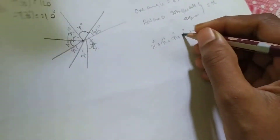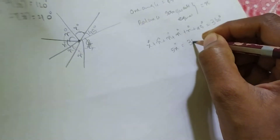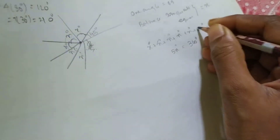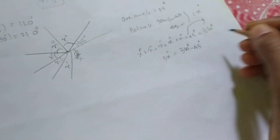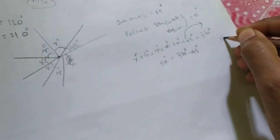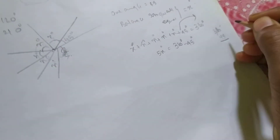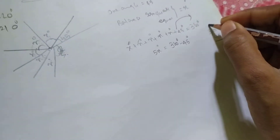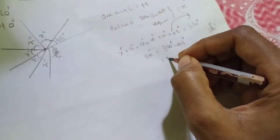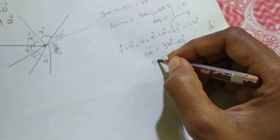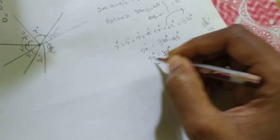So 45 degree plus 5x degree equals 360 degree. So 5x degree equals 360 degree minus 45 degree. 360 minus 45 — cancel this — gives 315 degree. So 5x degree equals 315 degree. So x degree is equal to 315 degree divided by 5.